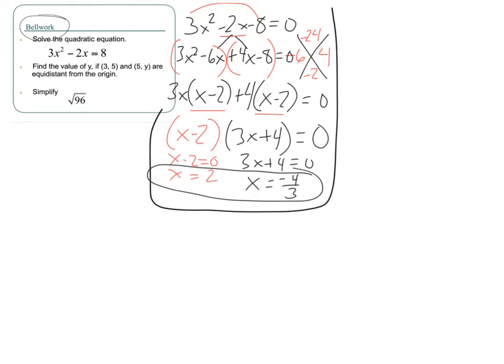The next one. Find the value of y if (3, 5) and (5, y) are equidistant from the origin. Let's draw a little picture here. We're saying that (3, 5), so roughly somewhere up here, right, the distance from the origin to that is the same as a point that's (5, y). We don't know exactly where it is. It's somewhere along this green line because its x coordinate needs to be 5, right? So it's going to be a point somewhere along that green line, but where? We do not know.